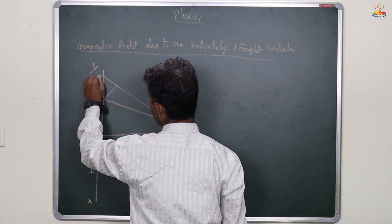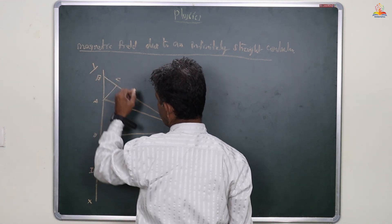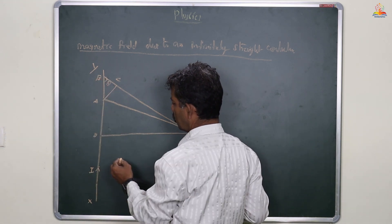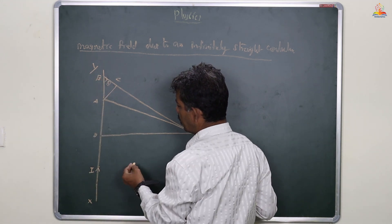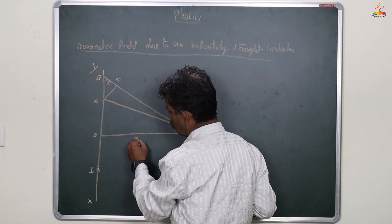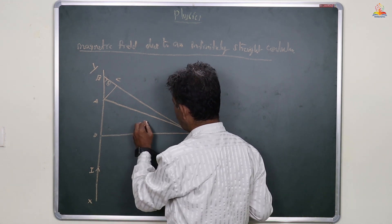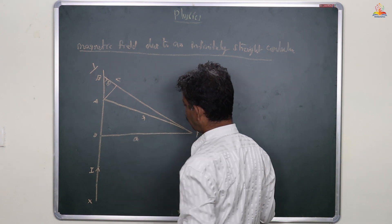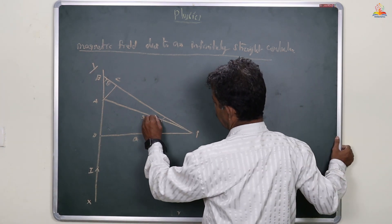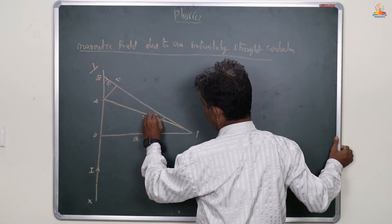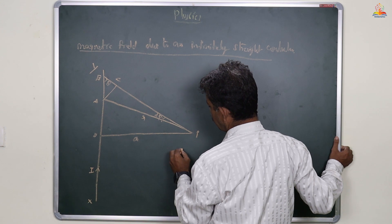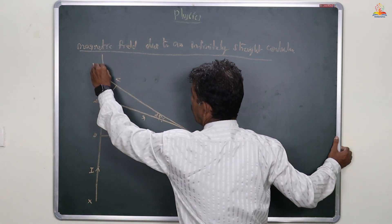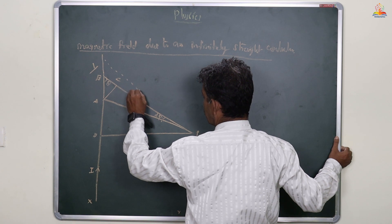We label points A, B, C on the diagram. The angle is theta. The distance OP is small a, and the distance AP is also small a. This forms the geometric setup for our derivation.